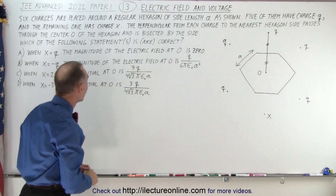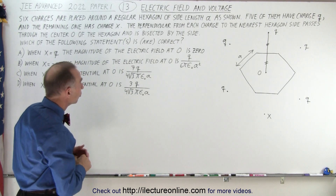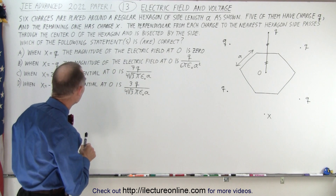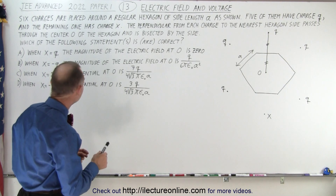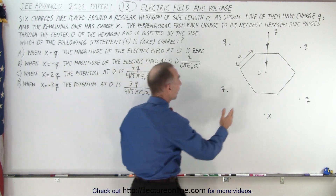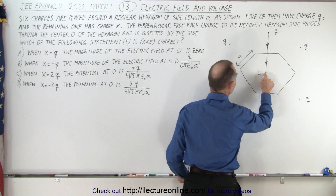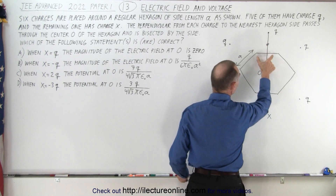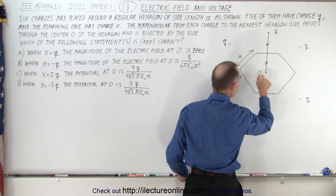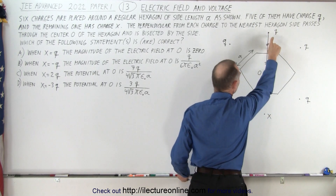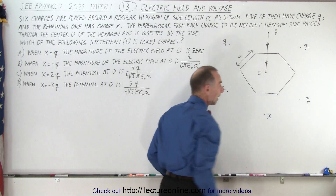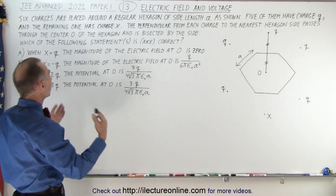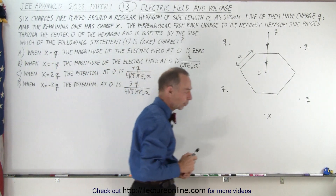The perpendicular from each charge to the nearest hexagon side passes through the center O of the hexagon and is bisected by the side. Notice that if you draw a line from the center of the hexagon to the charge, you go right through the middle of each of the six sides, and the length of each half is exactly the same. Then we have four statements that you need to determine which of the four are correct.